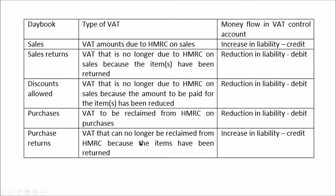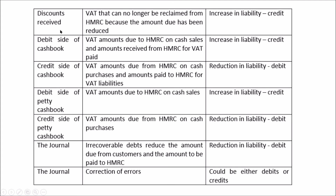Purchase returns: VAT can no longer be reclaimed from HMRC because those items were returned — increase in liability — credit. Discounts received: VAT can no longer be reclaimed from HMRC because the purchase amount was reduced — increases liability — credit. Debit side of the cashbook: debit bank, credit sales, also credit VAT — increasing liability — credit. Credit side of the cashbook: credit bank, debit purchases, also debit VAT — reduces the liability to HMRC — debit.